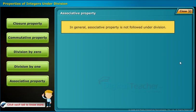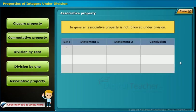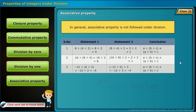Associative property is not followed under division. For example: (8 by 4) by 2 — first divide 4 by 2 to get 2, so 8 by 2 equals 4. But 8 by (4 by 2) — divide 8 by 4 to get 2, so 2 by 2 equals 1. Thus a by (b by c) is not equal to (a by b) by c. The remaining statements confirm the same. Therefore, division of integers is not associative.